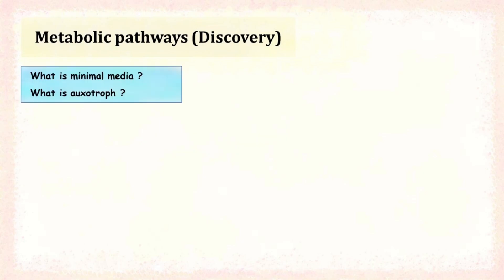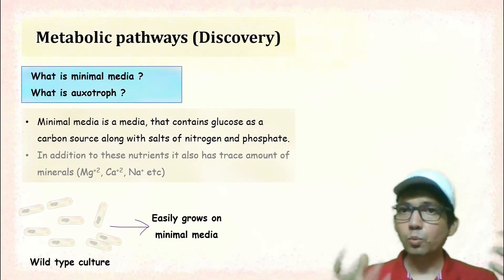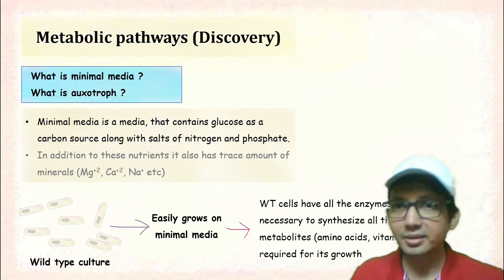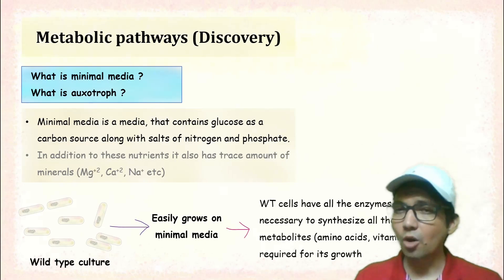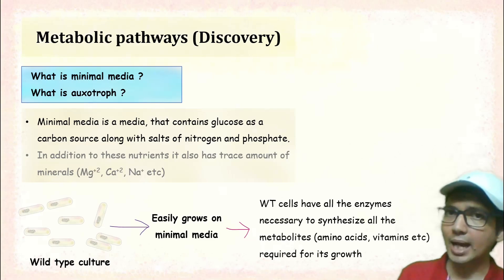What is minimal media? Minimal media is a media that contains glucose as a source of carbon, along with salts of nitrogen and phosphate. It also contains trace amounts of nutrients and minerals. The wild type culture easily grows on minimal media, because the wild type cells have all the functional enzymes required for the synthesis of metabolites needed for its growth.